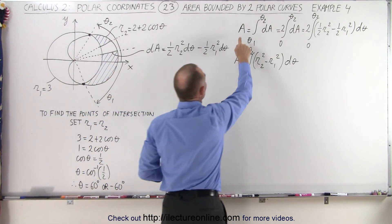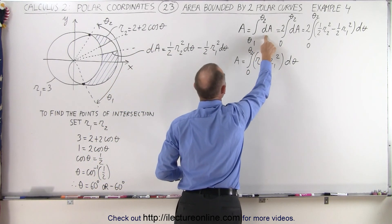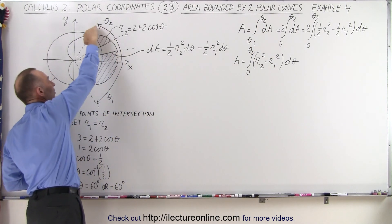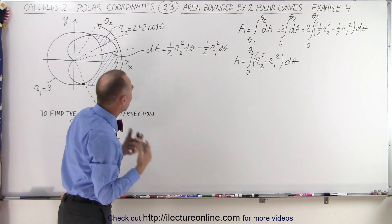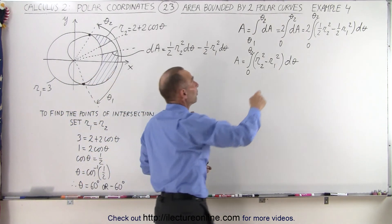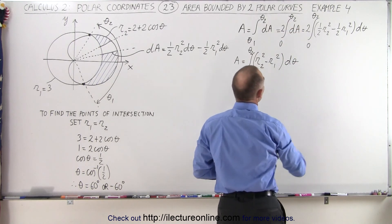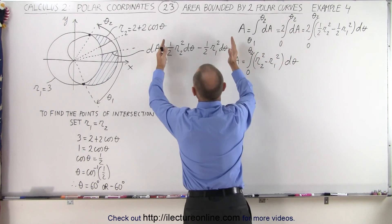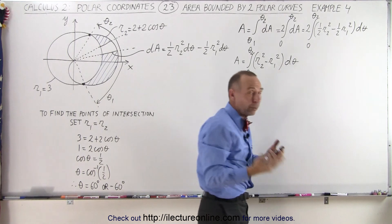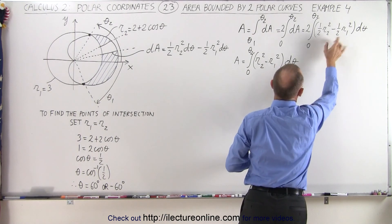So dA is one-half R2 squared dθ, which gives the area of the entire triangular shape, minus one-half R1 squared dθ, which is the area of the circle. We define the area of this region as the integral of dA from θ1 to θ2. Realizing the perfect symmetry, we can double the integral but only integrate from 0 to θ2. That gives us 2 times one-half, which is 1, leaving R2 squared minus R1 squared dθ.